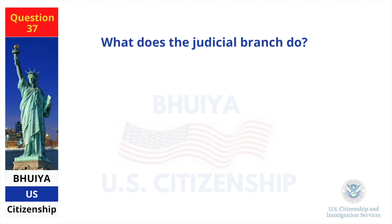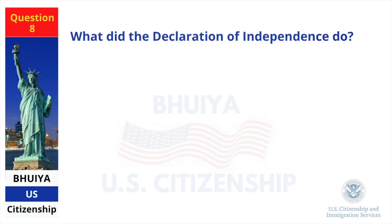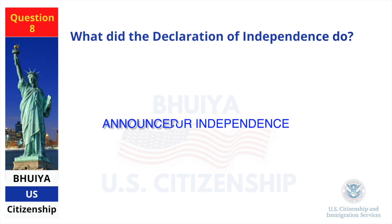What does the judicial branch do? Reviews laws. What did the Declaration of Independence do? Announced our independence.